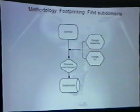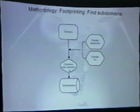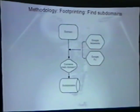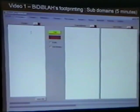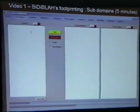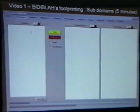If the result we get back from Google contains the main domain name, we can say it's part of a subdomain — like chess.ibm.com contains ibm.com, so it must be a subdomain. I'm going to show you a little video of how this works within Bidiblah. It takes about five minutes to run through. In this case, I set it up so it only returns three pages at a time with about seven keywords.